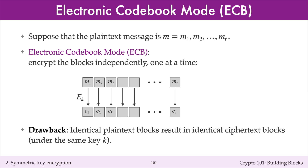A drawback of ECB mode is that identical plaintexts result in identical ciphertexts, when the same key is used, of course. And thus, ECB encryption is not semantically secure against chosen plaintext attacks.